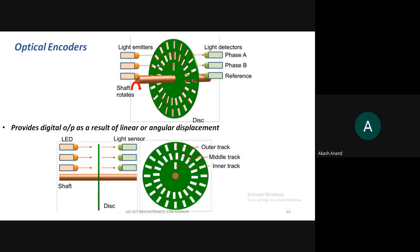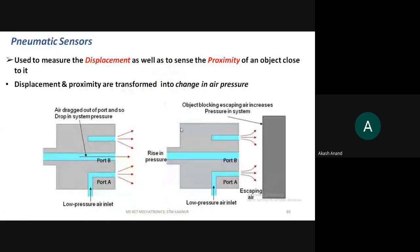You must know the basic working principle of optical encoders. Moving on to the next type — the pneumatic sensor. Pneumatic means something related to air, so air plays an important role here.